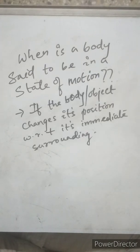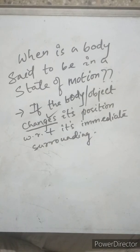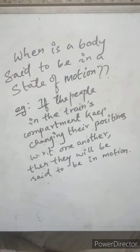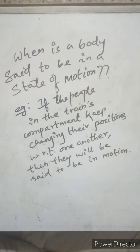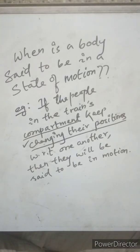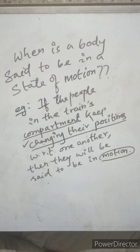A body is said to be in a state of motion when it changes its position with respect to its immediate surrounding. Using the same train example, if the two people in the compartment start changing their positions with respect to one another, they are said to be in motion. The compartment is the immediate surrounding, and within it they have started changing their positions.